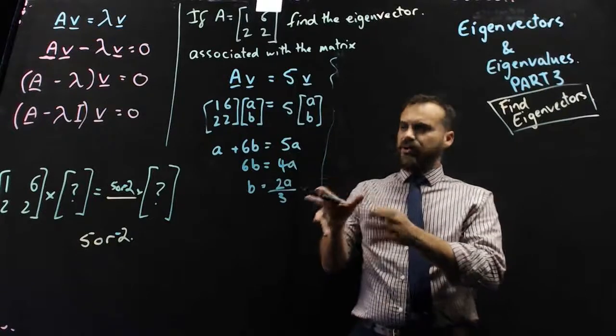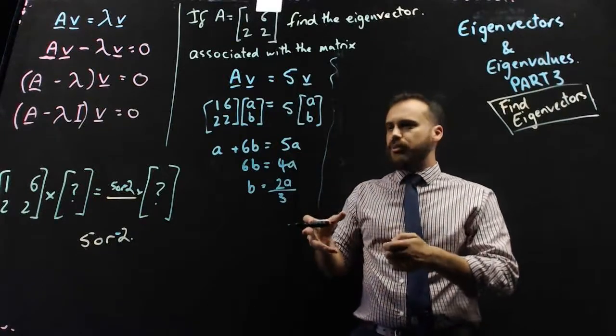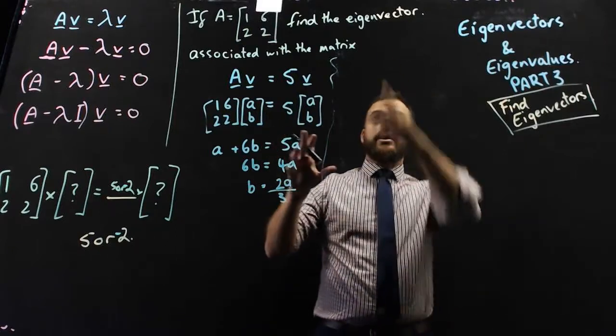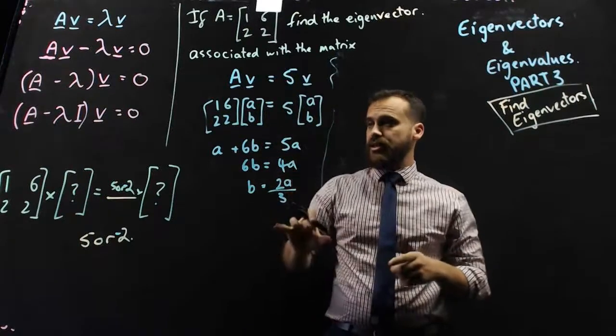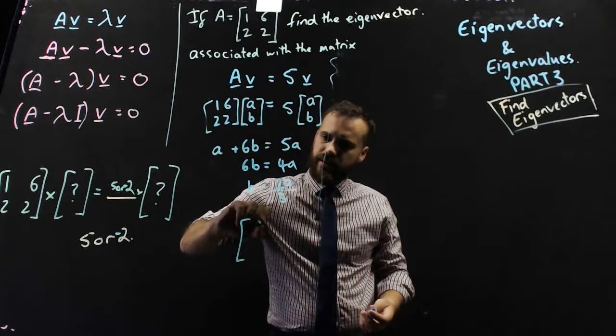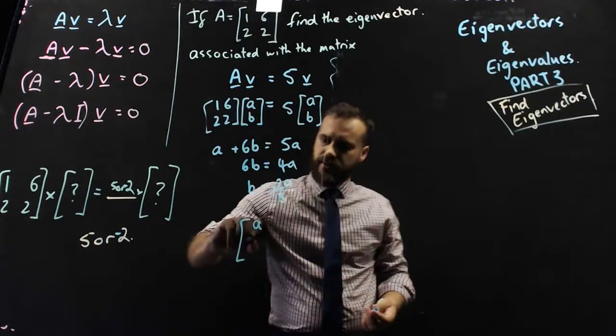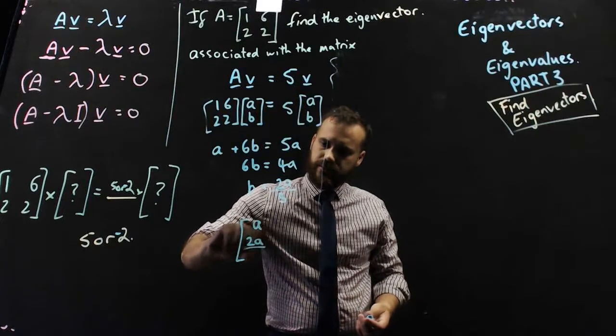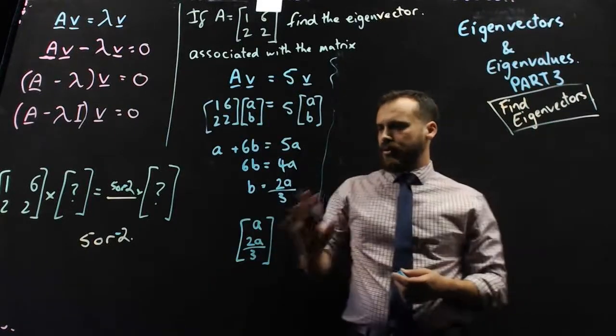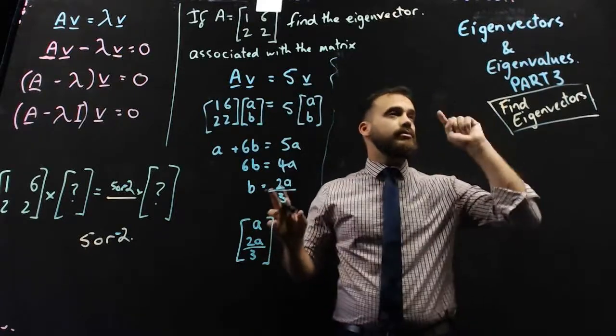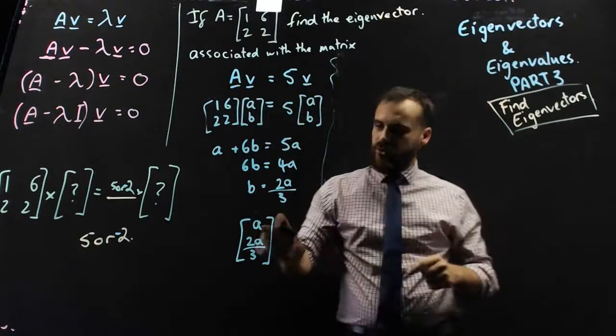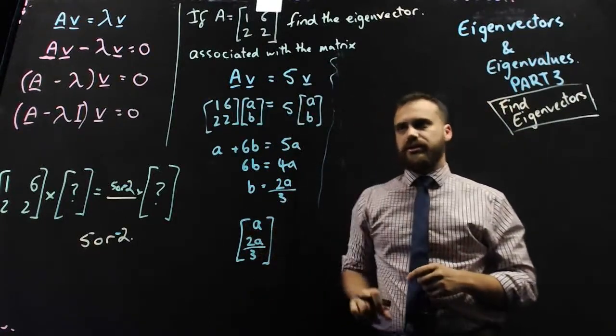All right, that doesn't look very satisfying, I suppose, but what it allows us to do is say that the eigenvector here is of the form a, 2a over 3. All right, so with an eigenvalue of 5, we have an eigenvector of the form a, 2a over 3.